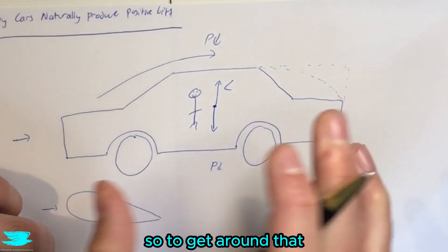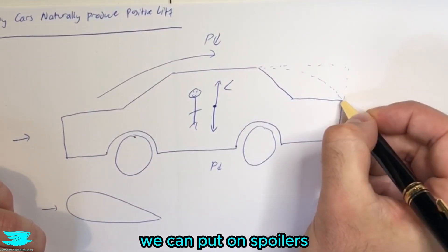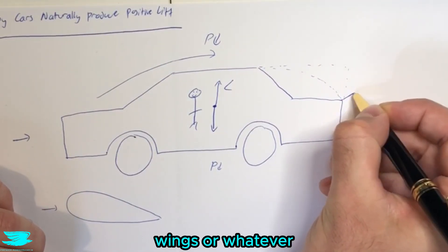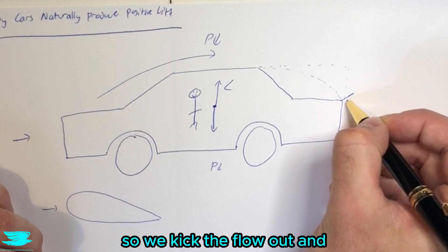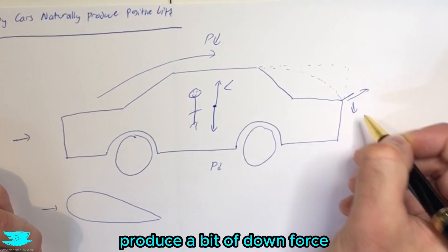So to get around that, we can put on spoilers, for example. We put on the back here wings or whatever. And ideally, this forces the car down more. So we kick the flow up and produce a bit of downforce.